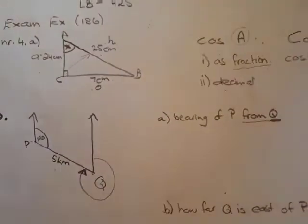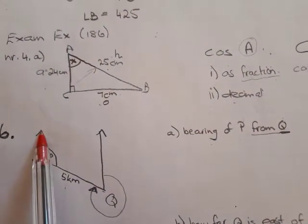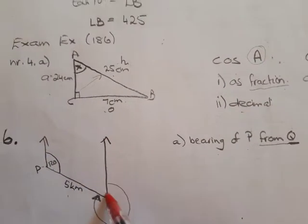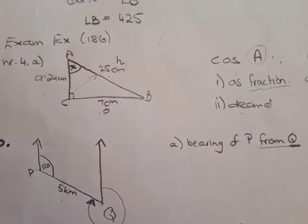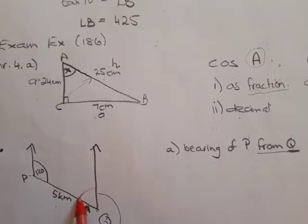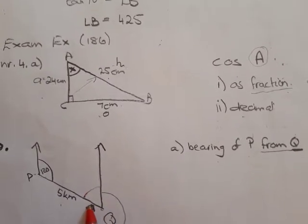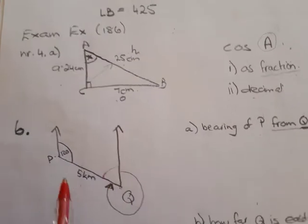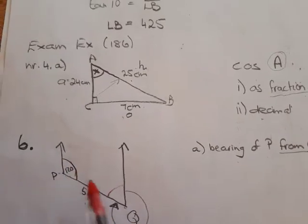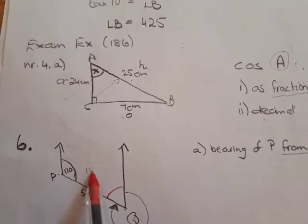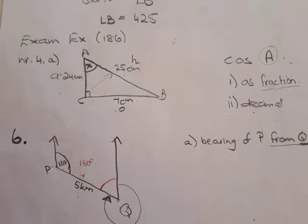So again you've got your two north lines which are parallel. If I get this angle then I can calculate the angle being asked. And if you look at this, that one plus that one gives 180 degrees. They are co-interior.